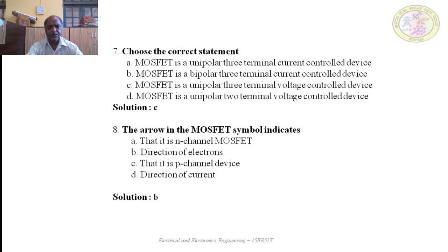Question 8: The arrow in the MOSFET symbol indicates: A — N-channel mobility; B — direction of electrons; C — that it is a P-channel device; D — direction of current. The correct answer is B — the direction of electrons flow.